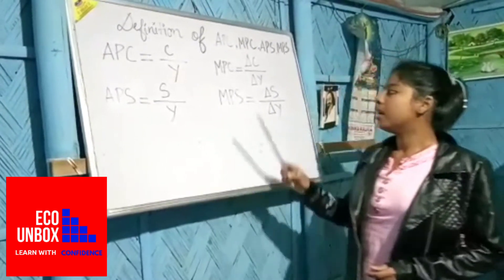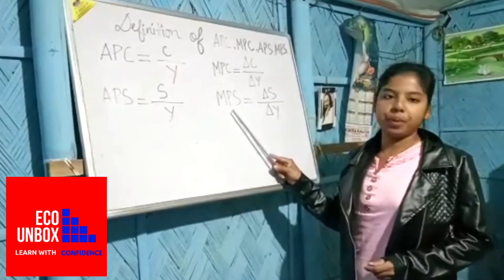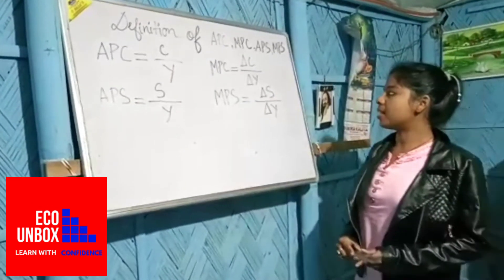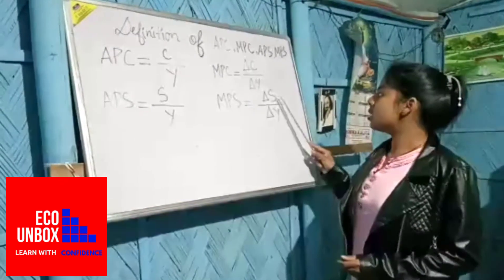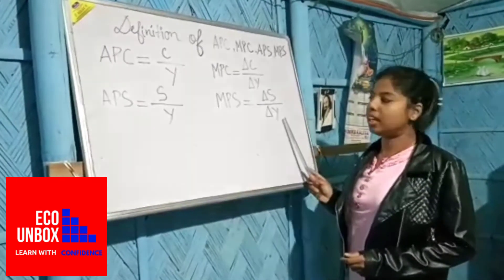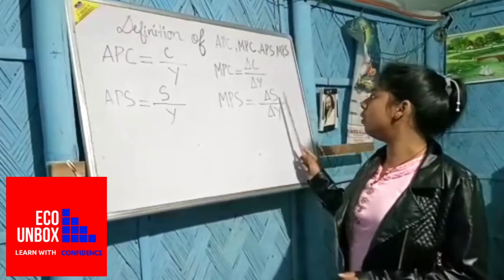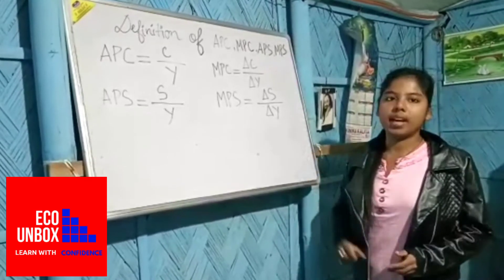And the last concept is MPS. MPS can be defined as the ratio of change in saving to change in income. So symbolically, MPS equals delta S by delta Y, where delta S means change in saving and delta Y means change in income.